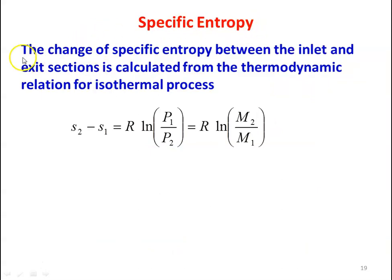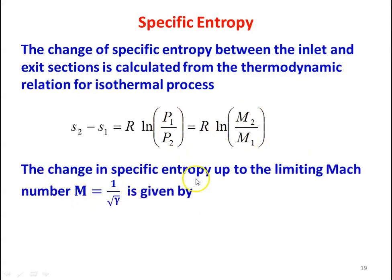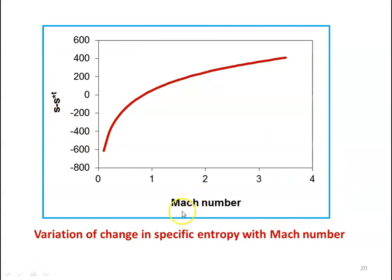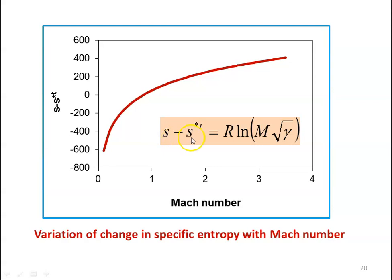The change in specific entropy between inlet and exit for an isothermal process is S2 − S1 = R · ln(P1/P2) = R · ln(M2/M1), since P1/P2 = M2/M1. The entropy change up to the limiting Mach number M = 1/√γ is S − S*T = R · ln(M√γ), substituting M1 = 1/√γ and M2 = M. The variation of S − S*T with Mach number is shown for γ = 1.4.